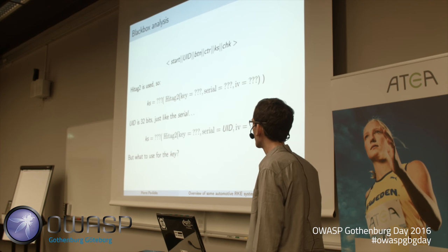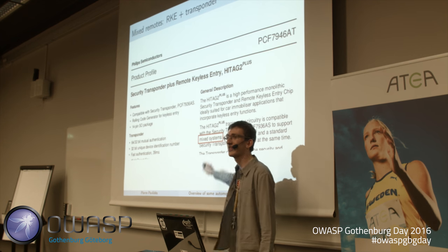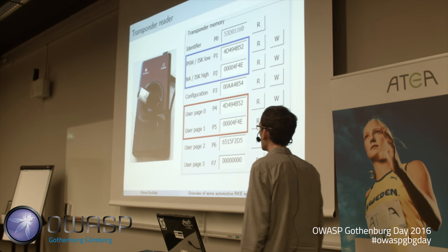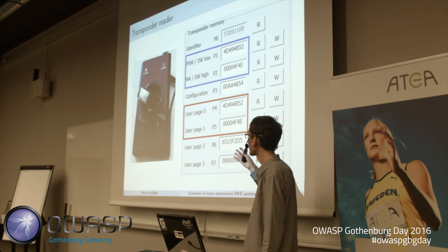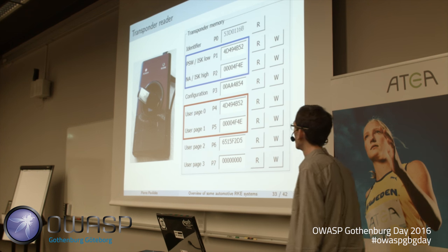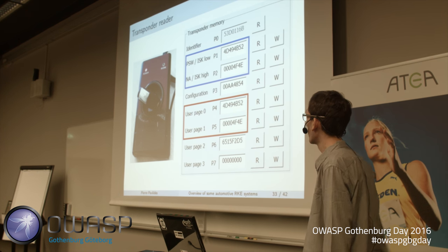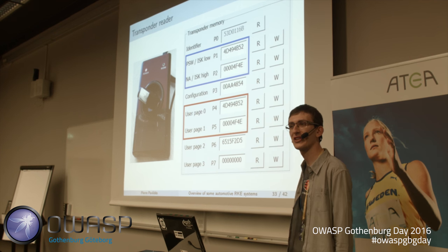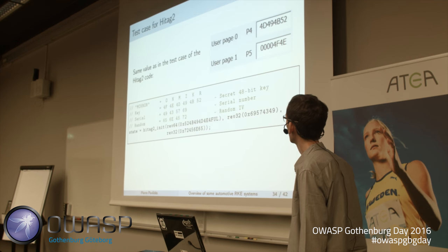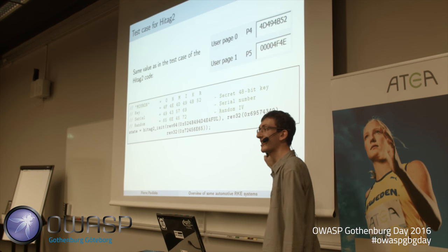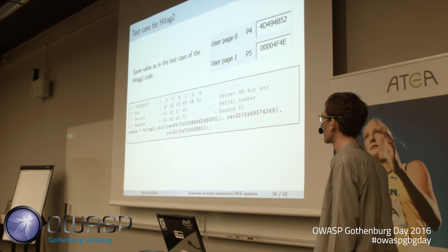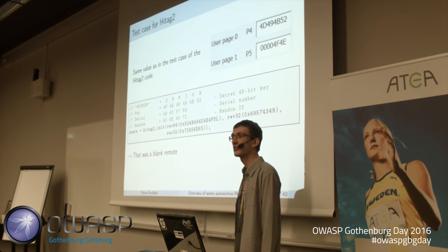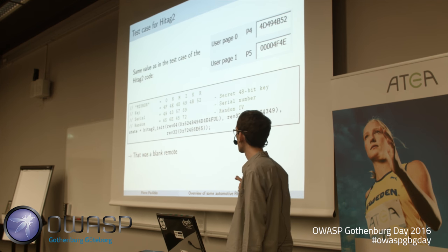For the key: since HiTag2 is used in a mixed system where the transponder and RKE share the same chip, a reader from the transponder side can read part of the memory. In blue is the transponder key; in red are two user pages whose values match the transponder key. Notably, this value is the default test-case value for HiTag2. Since the remote I read was blank — never associated with a car — this is likely the right key.